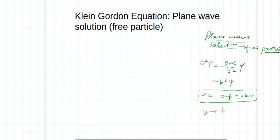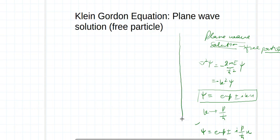Since k can be written as p over ħ, keeping this in mind I can write down ψ equals exponential of plus or minus iota times p over ħ times x. The solution looks like this. This is just a recall of the plane wave solution for the free particle as discussed in the case of the Schrödinger wave equation.